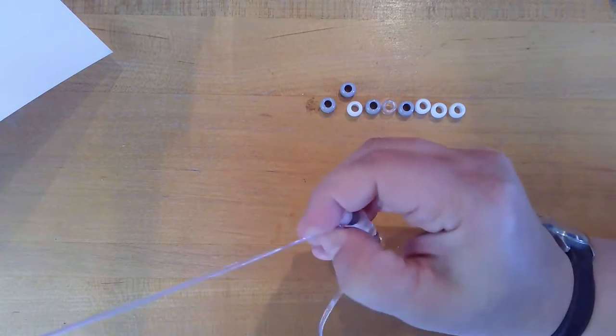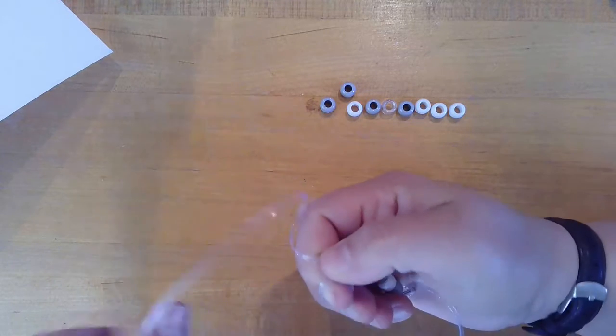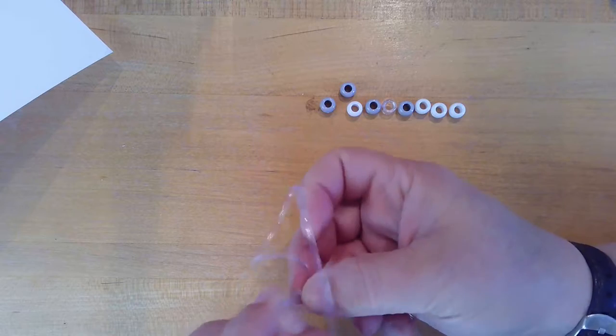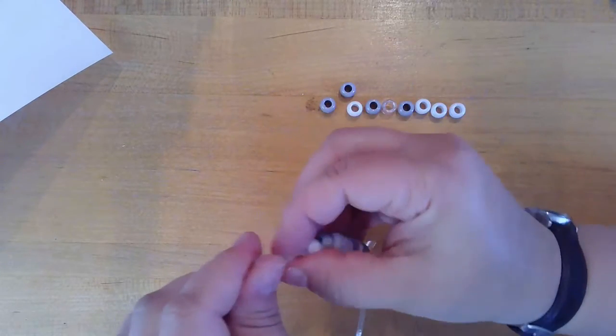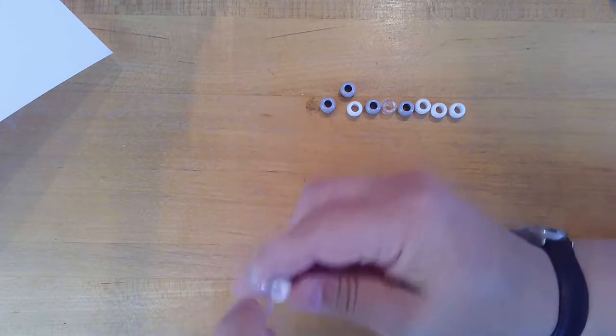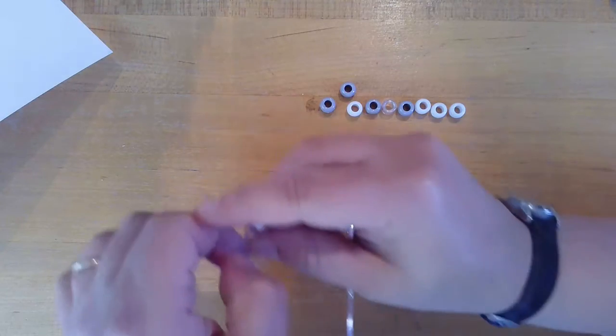If you really want to keep them secure, you might want to put a dab of glue on the knot when you're all done. But that's optional. It depends on how well you tie your knots. You want to make sure that they're nice and tight and big enough so that the beads don't slide over them and get lost.